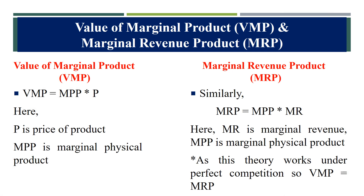Next comes the value of marginal product (VMP), which is calculated by multiplying the marginal physical product with the price of the product. Similarly, MRP is calculated by multiplying MPP with MR (marginal revenue). The theory also assumes that VMP is equal to MRP, as it works under perfect competition.